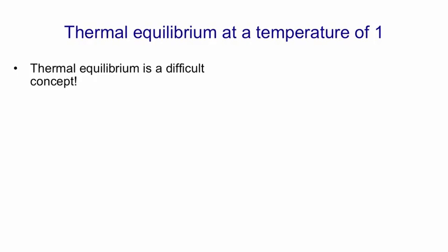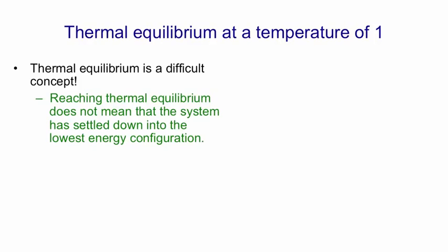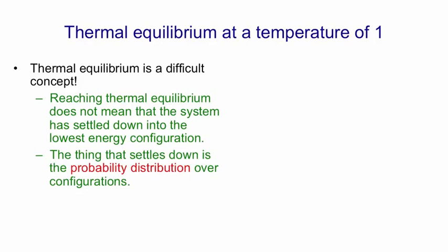It's a difficult concept. Most people think that it means the system has settled down and isn't changing anymore. That's normally what equilibrium means, but it's not the states of the individual units that have settled down. The individual units are still rattling around at thermal equilibrium unless the temperature is zero. The thing that settles down is the probability distribution over configurations. That's a difficult concept the first time you meet it, and so I'm going to give you an example.